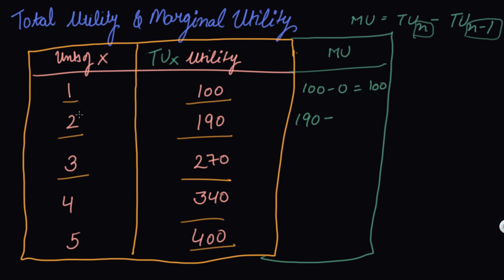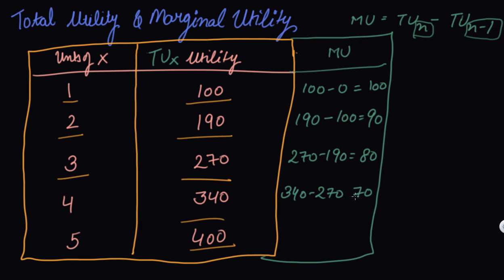From consuming one additional unit of X, the additional satisfaction you get is your marginal utility. So consuming the 2nd unit gives an additional satisfaction of 90 utils. The 3rd unit gives 80 utils additional. The 4th unit gives 70 utils additional. The 5th unit gives 60 utils additional. The additional satisfaction you get from consuming one additional unit of commodity X is your marginal utility.